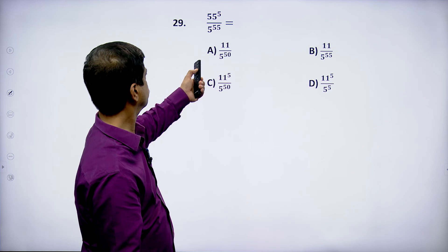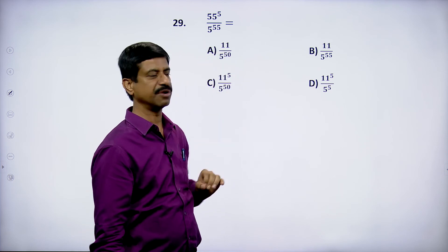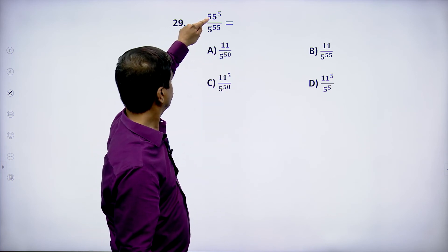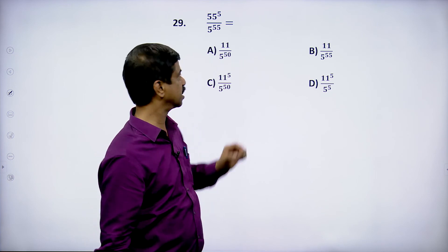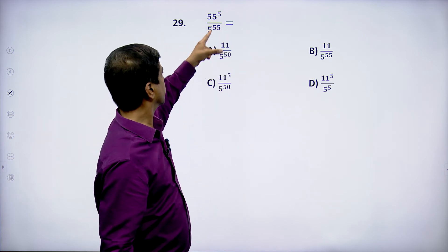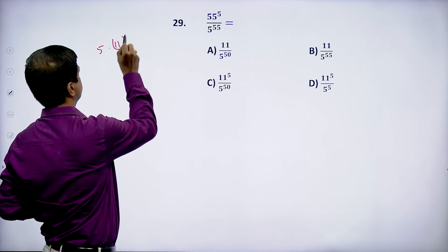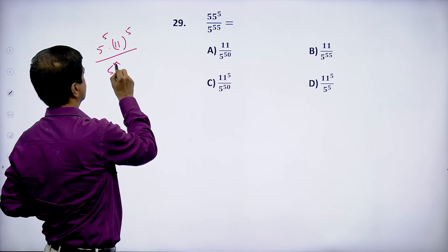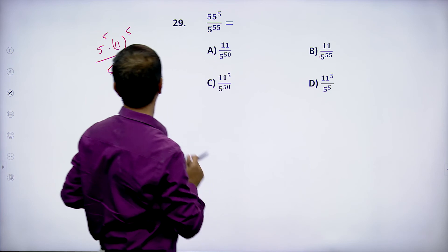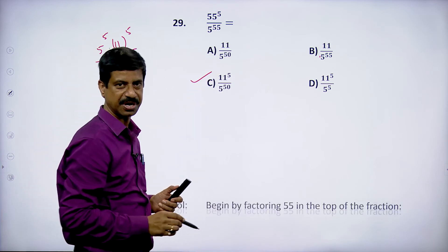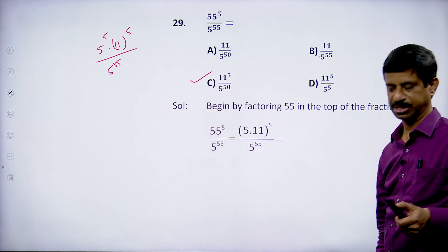Next question — can we identify the answer orally? 55 = 5·11, so 55^5 = 5^5 · 11^5. In the expression, 5^5 appears in the denominator, leaving 11^5. And 55 - 5 = 50, so option C satisfies.